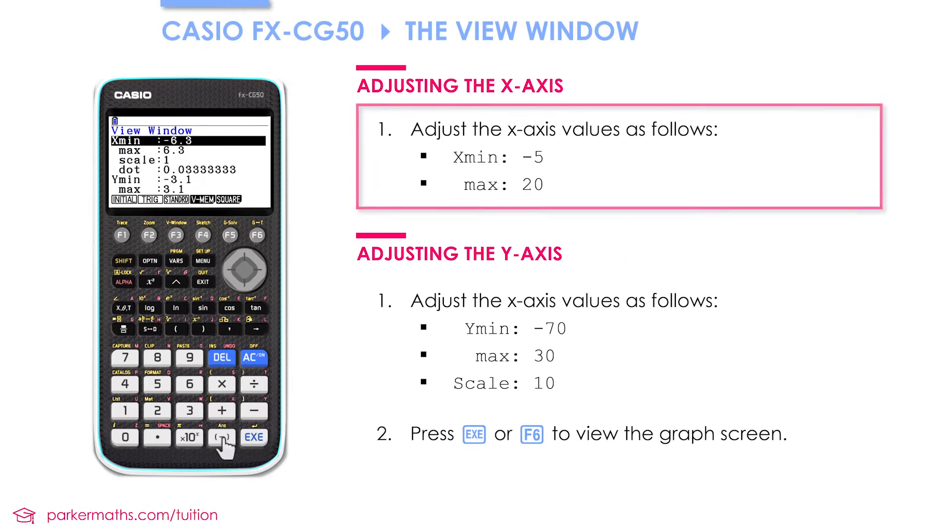So I'm going to set the x minimum to -5 and the x maximum to 20. I'm going to leave the scale as 1; that just means the x-axis is marked every unit. And the dot value will automatically adjust itself based on what we put in for these values, so we never really need to touch the dot value.